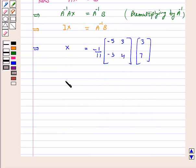X is equal to minus 1 by 11 into 15 plus 21, here minus 9 plus 28. This is equal to minus 1 by 11 into 6, 19.